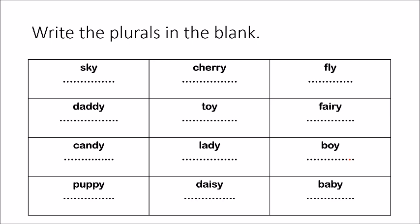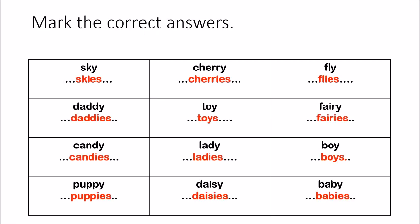Let's do an activity. Write the plurals in the blank. Now check the answers: sky → skies, cherry → cherries, fly → flies, daddy → daddies, toy → toys, fairy → fairies, candy → candies, lady → ladies, boy → boys, puppy → puppies, daisy → daisies, baby → babies.